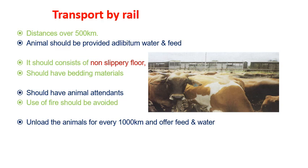Transportation by rail is ideal for large numbers of animals and very long distances — more than 500 km. Animals should be provided ad libitum water and feed during the journey. The wagon should have a non-slippery floor, proper bedding material, and animal attendants. No fire should be used within the wagon as it badly frightens animals. When the distance exceeds 1,000 km, animals should be unloaded to be given feed, water, and exercise, then reloaded.